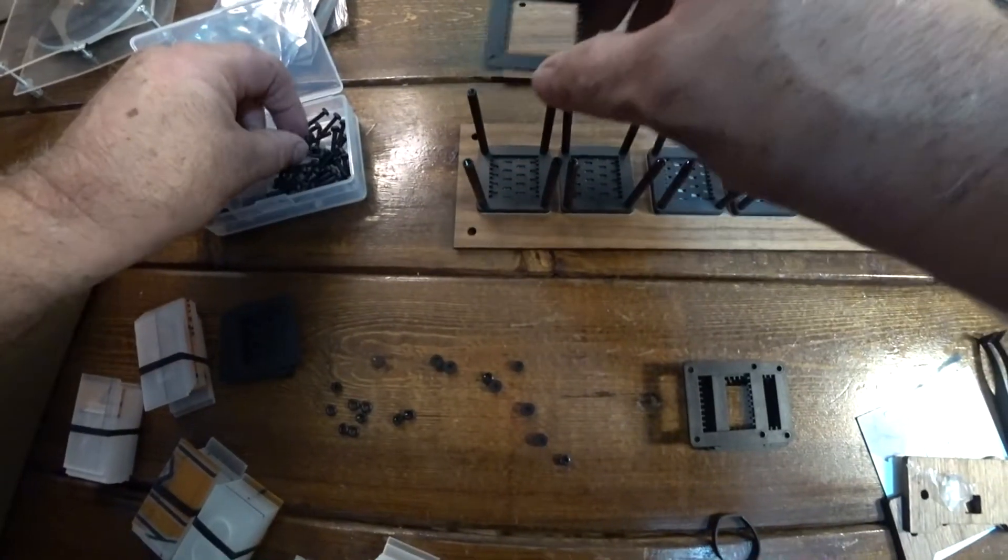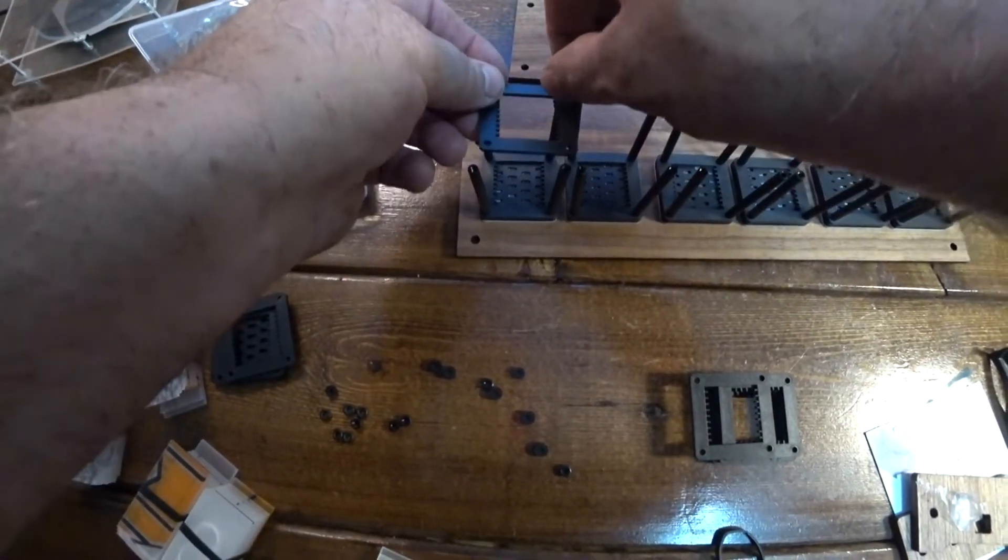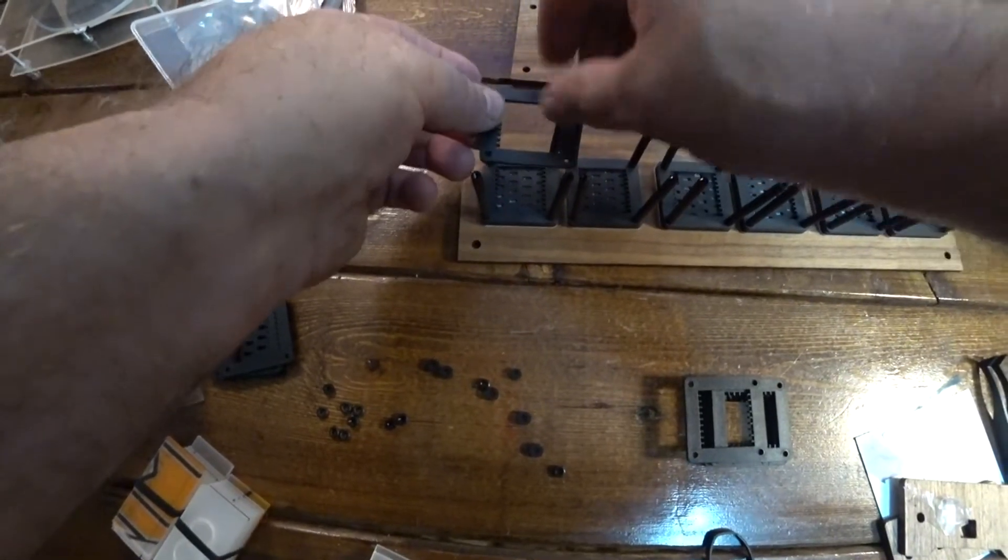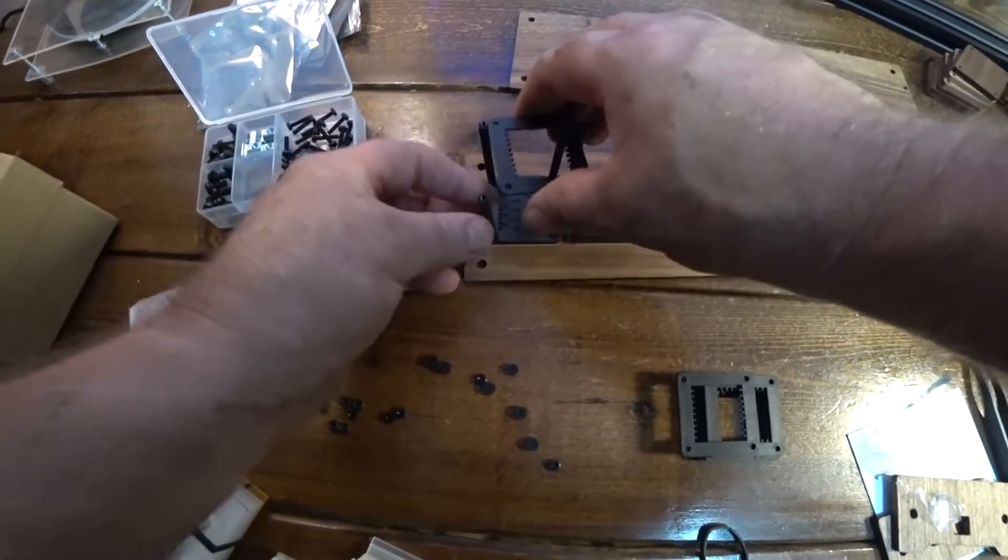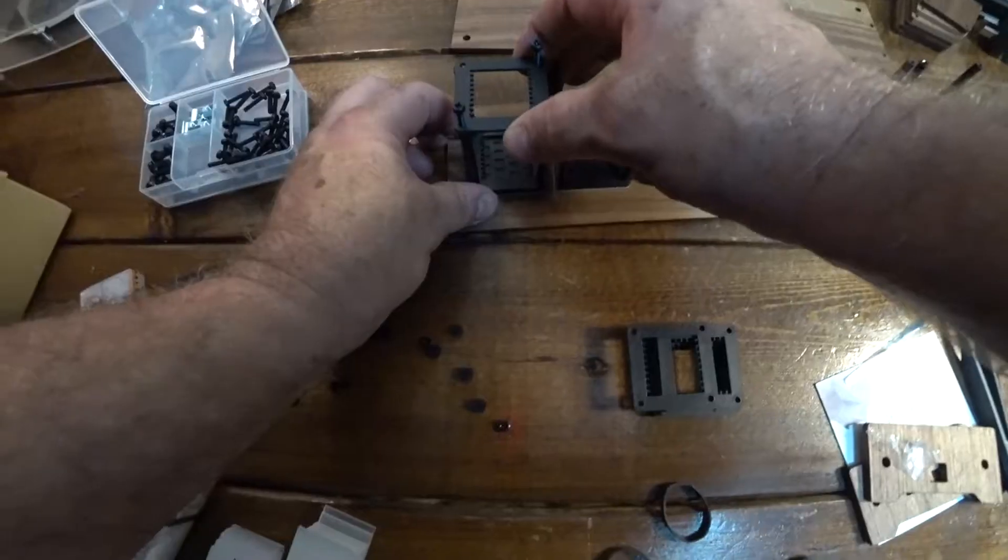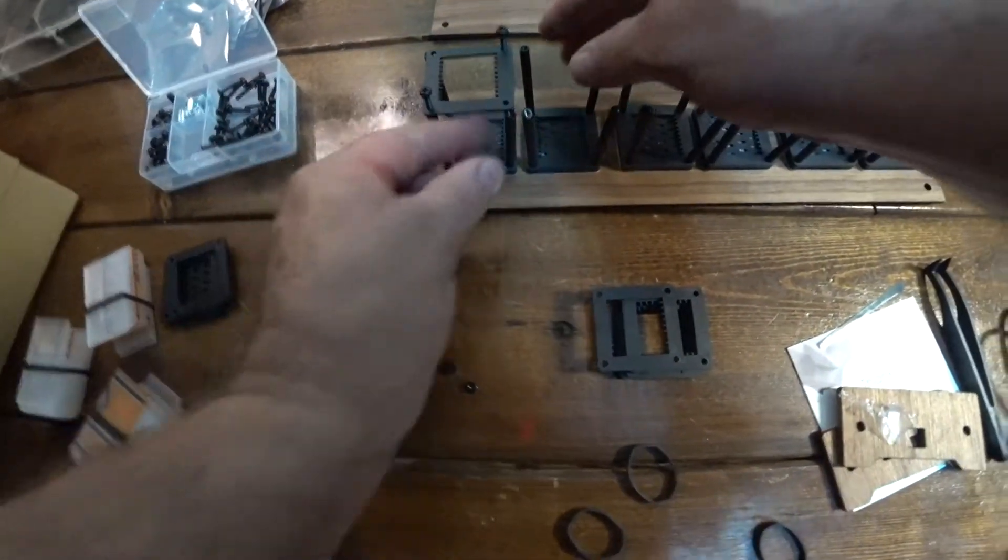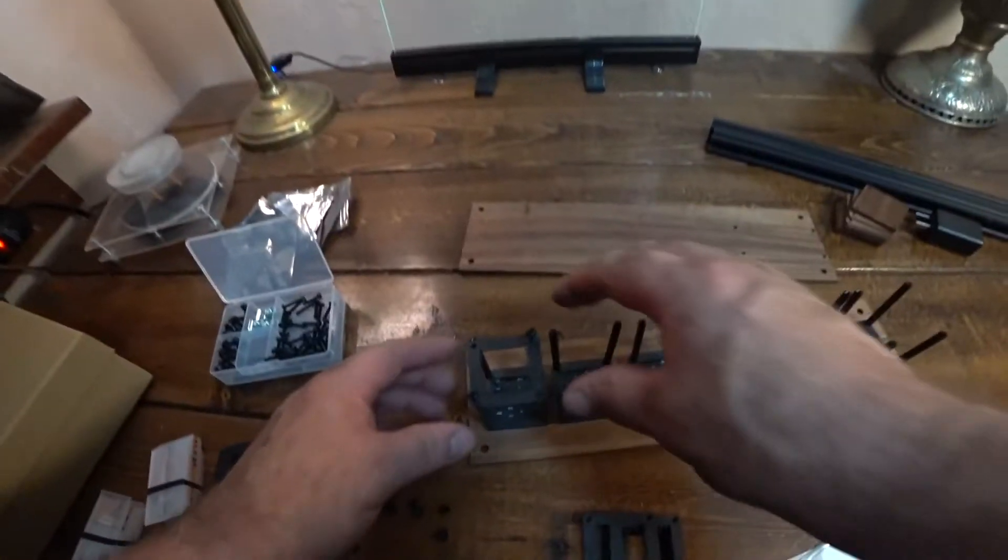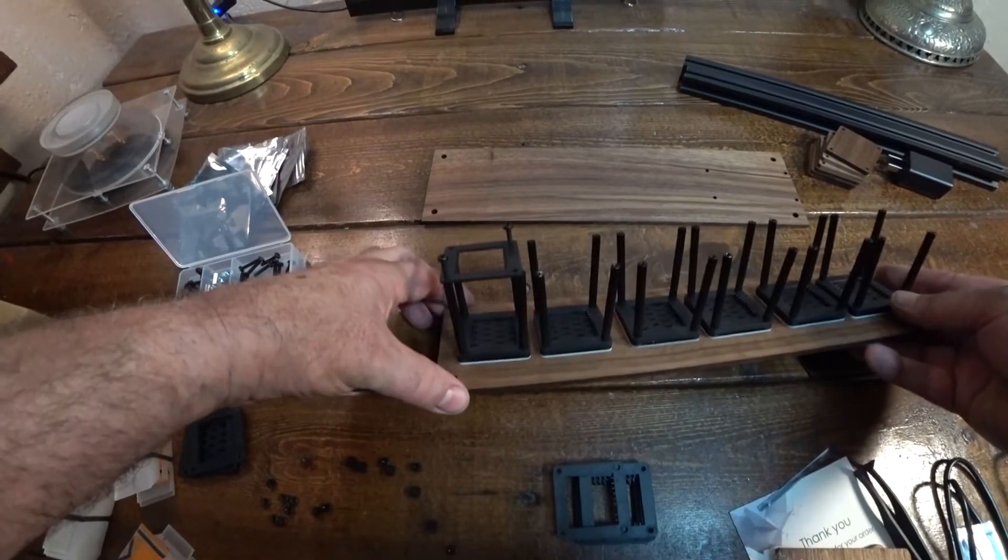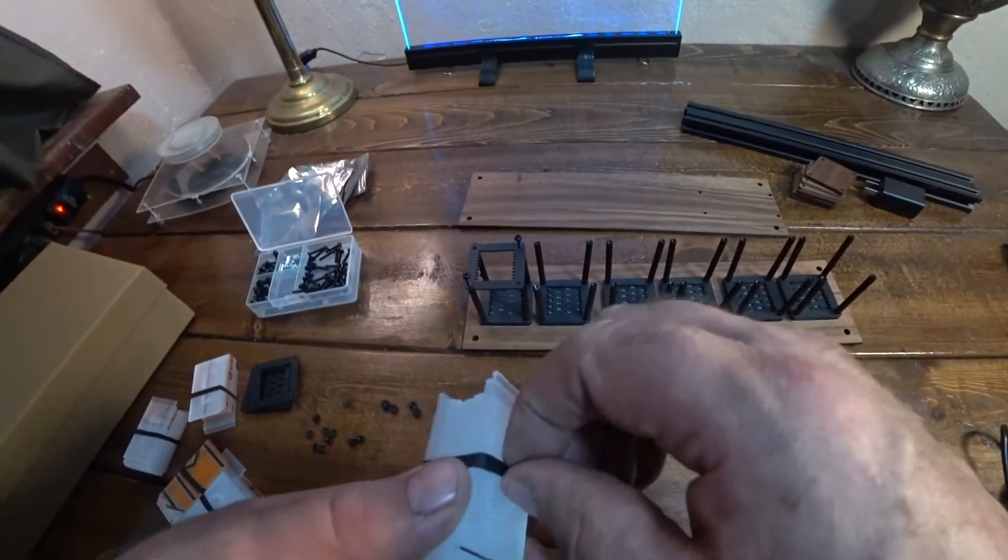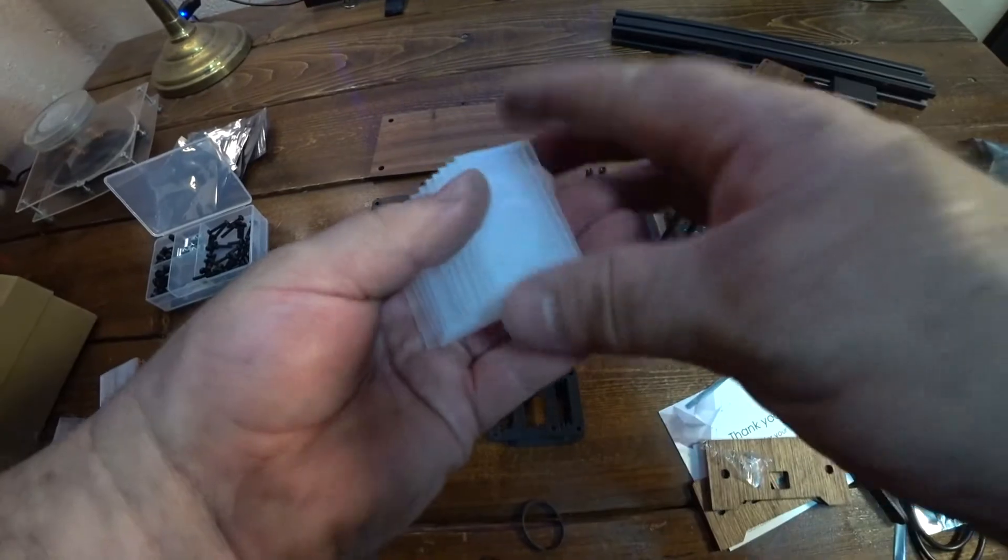Now next up is basically take an Allen head screw, put it on, don't snug it down. Put one there and one crossed like that. Once that's on there you're gonna slide in the individual numbers. We have zero through nine.